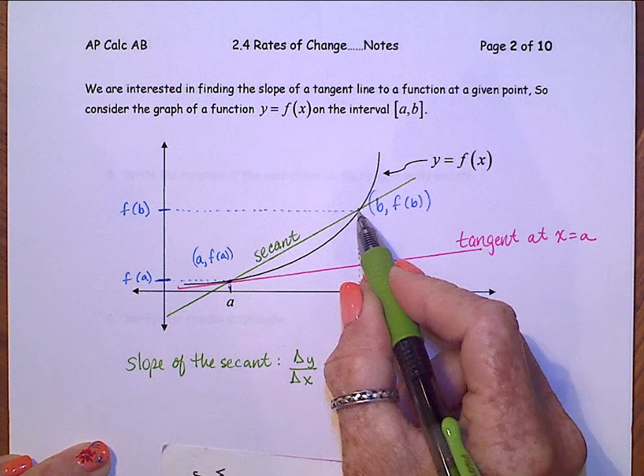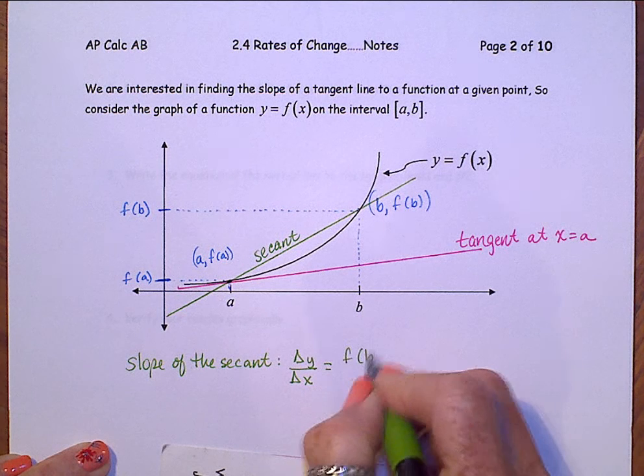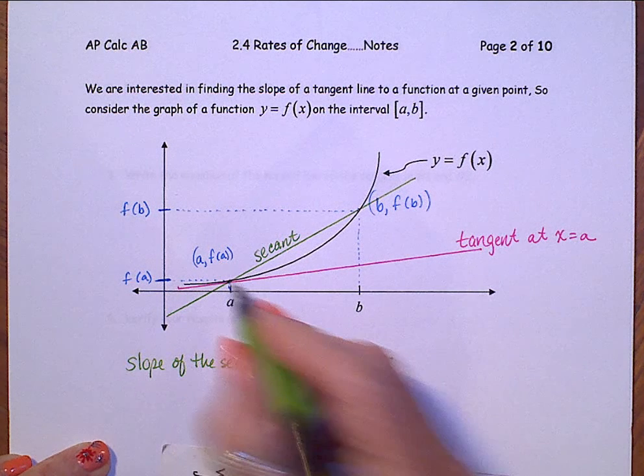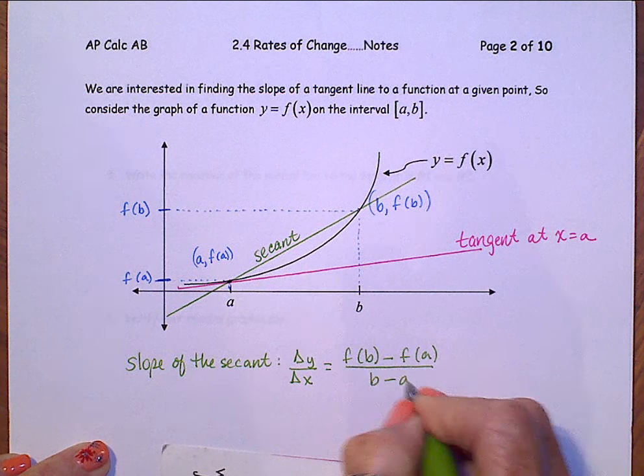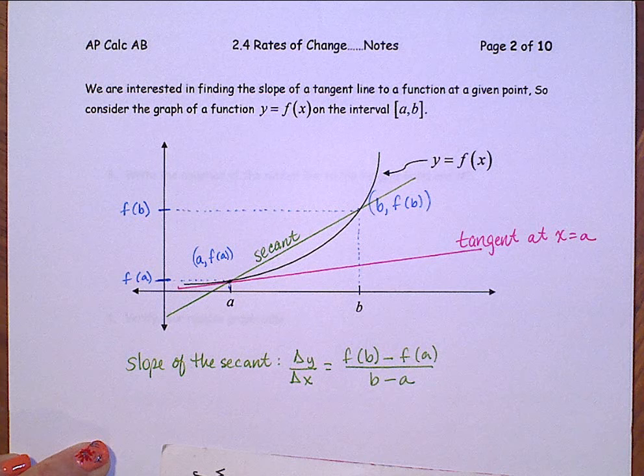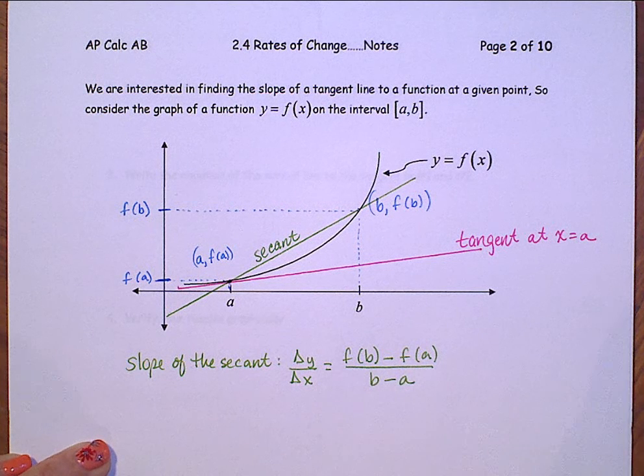So the y value here, f of b, minus the y value here, f of a, all over b minus a.